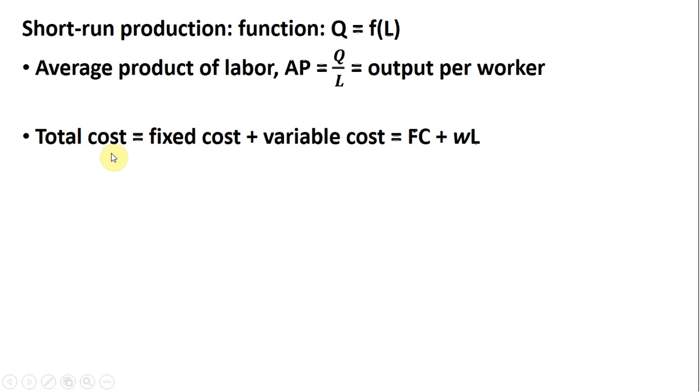We have the firm's total cost which is comprised of a fixed cost component and variable cost. FC will represent fixed cost and with one variable input the variable cost will equal the wage times L, which represents units of labor.